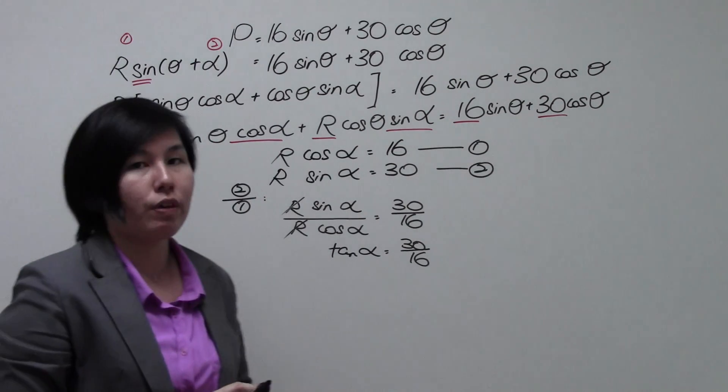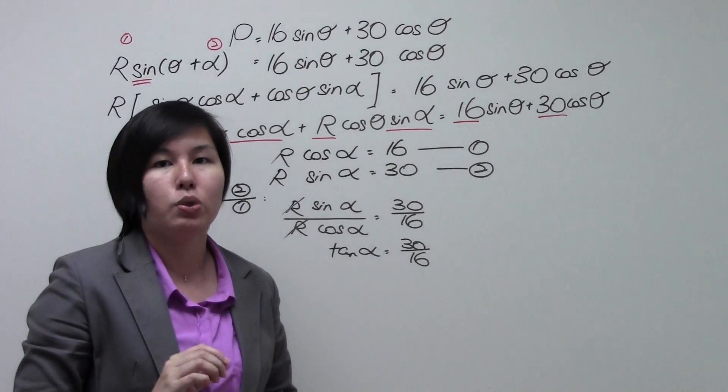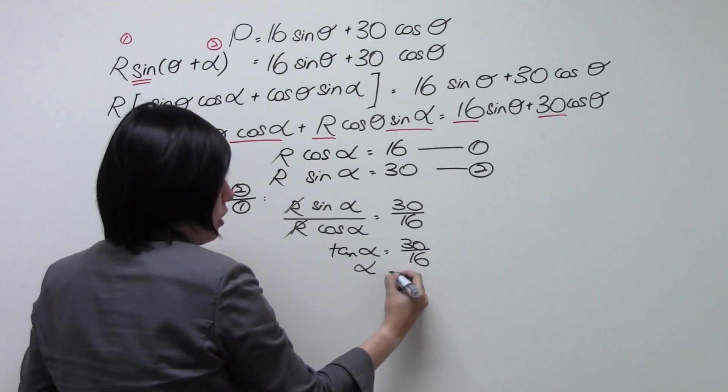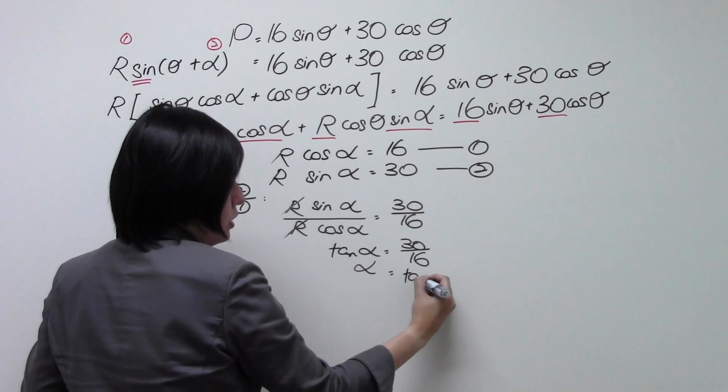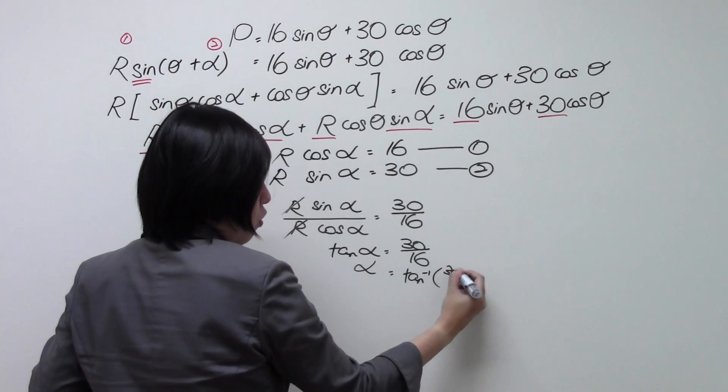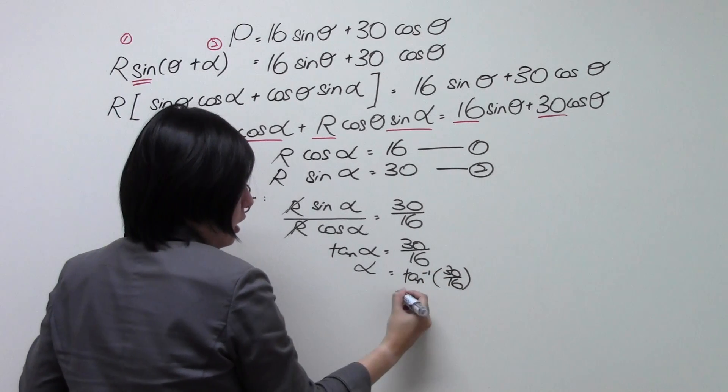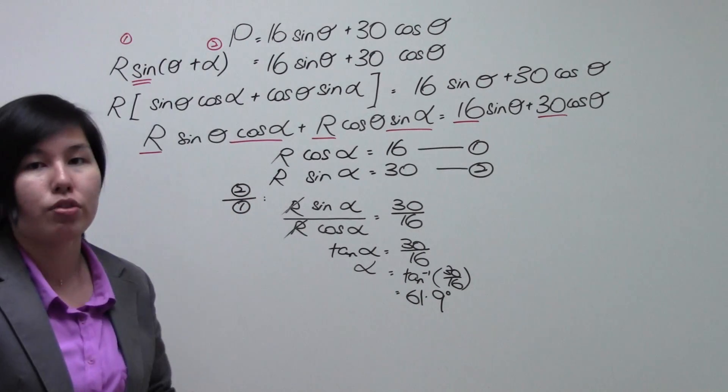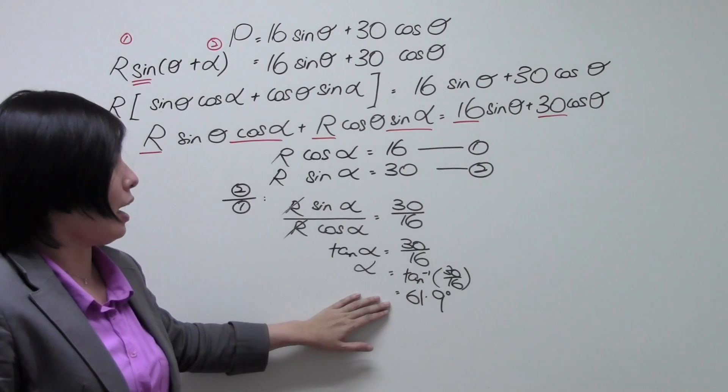Now with this, because the condition of alpha is to be in degrees, you set your calculator to degree mode before you find out what is alpha by taking tangent inverse 30 over 16. And you get your answer is 61.9 degrees. So that is how we go about finding alpha.